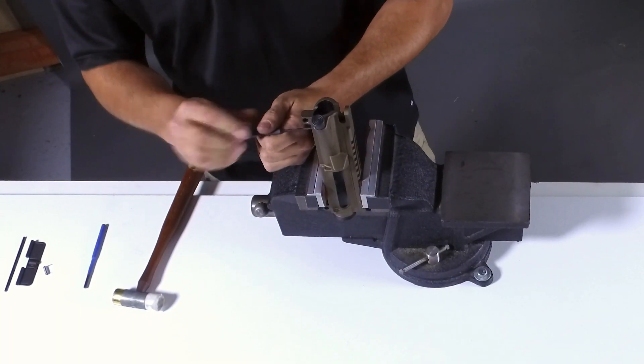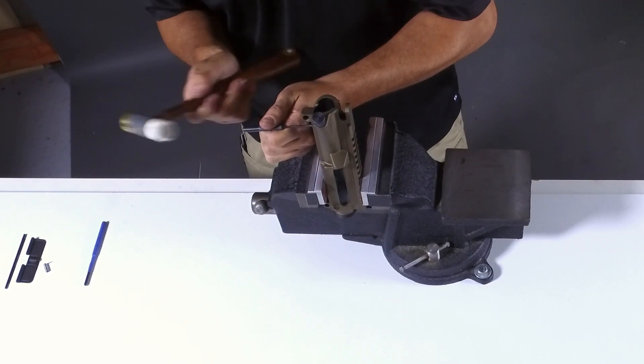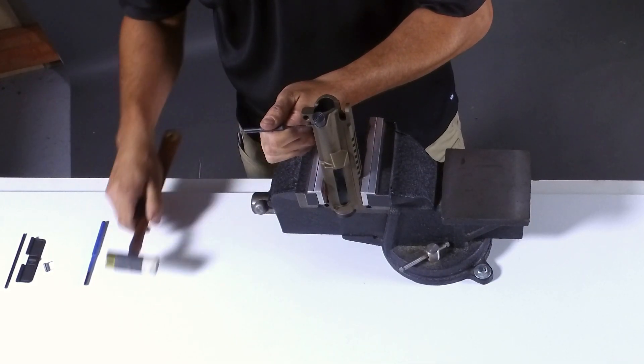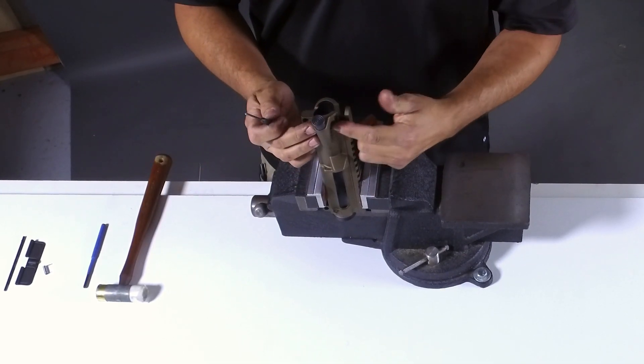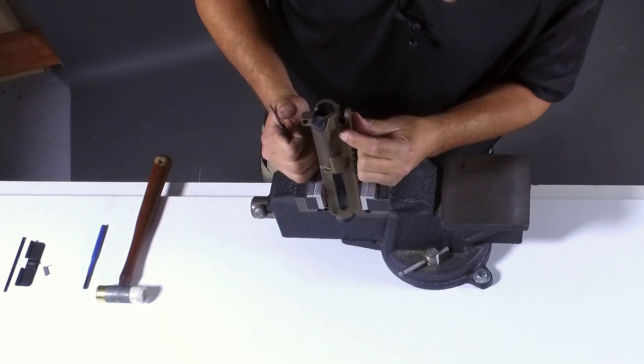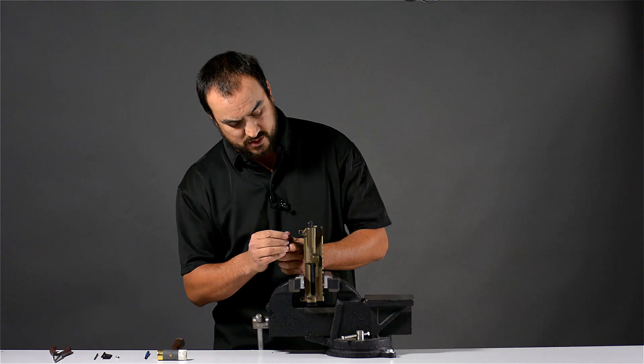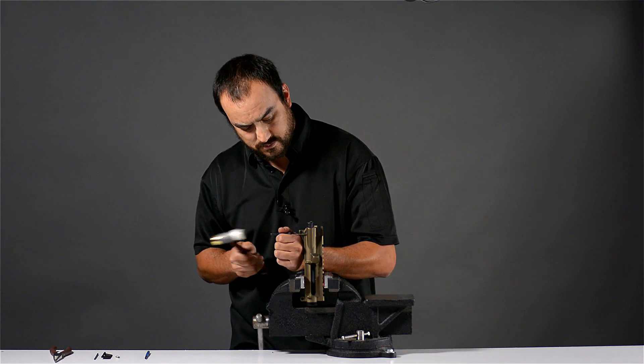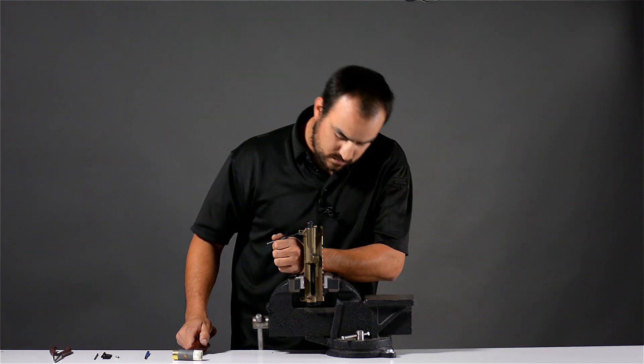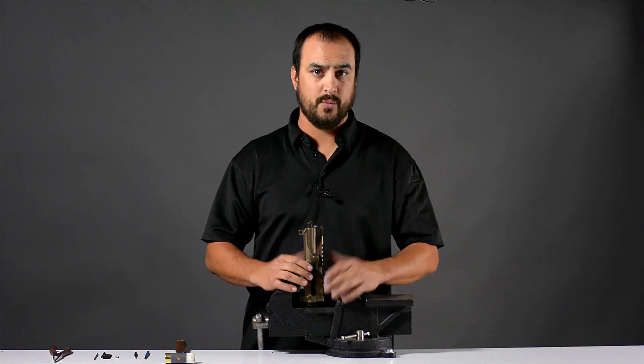Now that we have it flush, we are going to check both sides here and make sure it is centered. On this side, we have a little larger gap than we do on this side, so we are going to finish tapping it in until we get it more centered. There is our forward assist being installed with the roll pin.